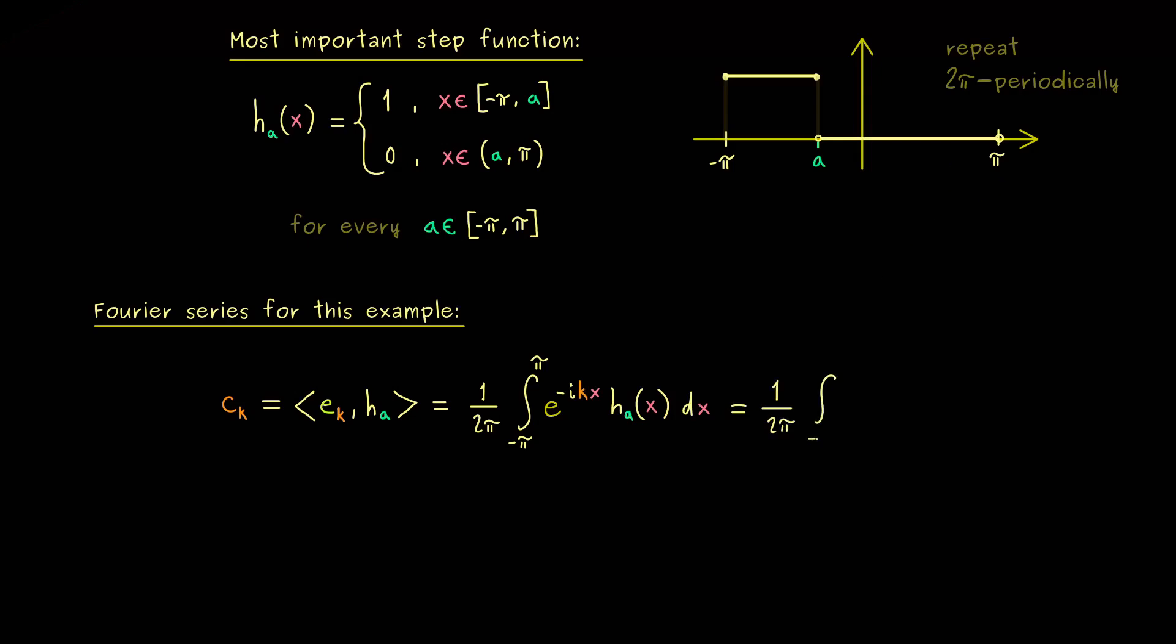Hence, we only have to integrate on the left hand side, which means from minus pi to a. And what remains inside the integral is just the constant 1. So we just have the exponential function here. Therefore, in order to solve this integral, we only have to find an antiderivative of this exponential function. And then we see we have to distinguish two different cases.